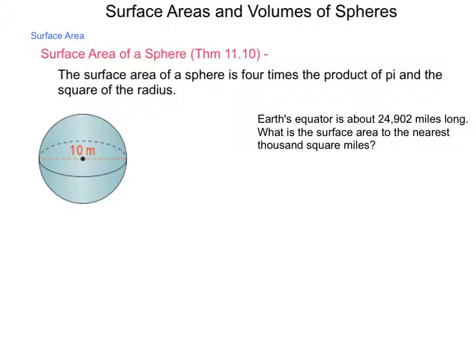Using the example of the sphere provided and the description given, what would be the surface area of this sphere on the left? It has a diameter of 10 meters, but we need to work from our radius. So, surface area of this sphere, according to the theorem, is four times pi r squared. What would our radius be if the diameter was 10? Well, that's 5.